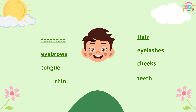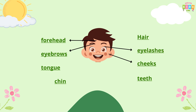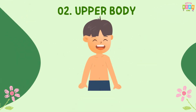Say again together: forehead, cheeks, eyebrows, eyelashes, teeth, tongue, chin, hair. These are the parts of the upper body.